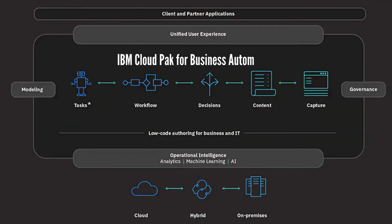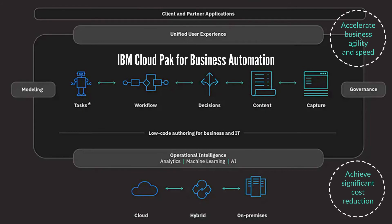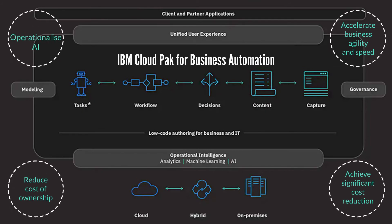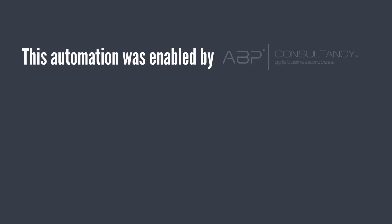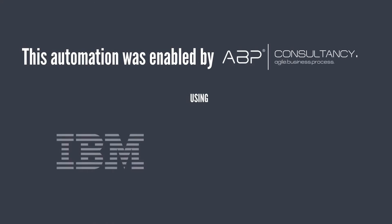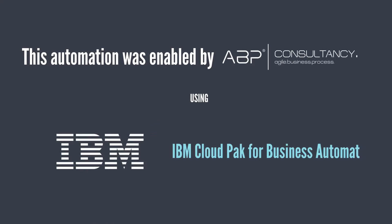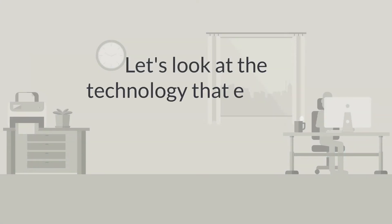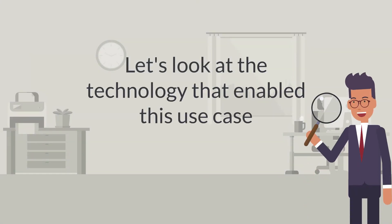You can try IBM Operational Decision Manager as part of the IBM Cloud Pak for Business Automation, empowering you to automate the implementation of millions of business rules and policies across your organization. Let's look at the technology that enabled this use case.